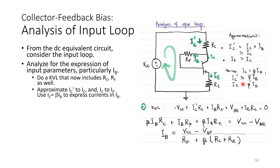With these approximations replacing all terms in the KVL expression, we are left with only IB. The expression for IB becomes: IB = (VCC − VBE) / (RF + β(RC + RE)). This resembles Ohm's law — current equals total voltage over total resistance. The KVL shows that IB is set by RF, RC, RE, and the value of beta.